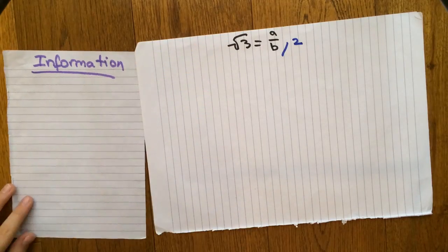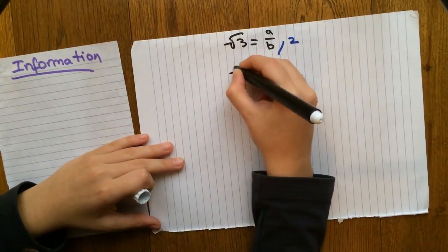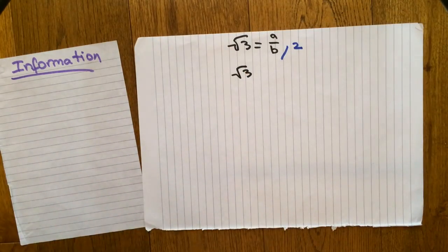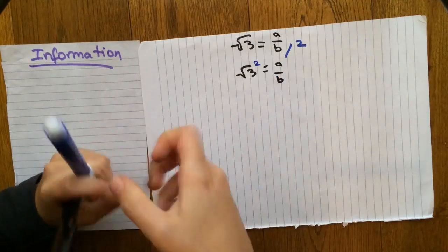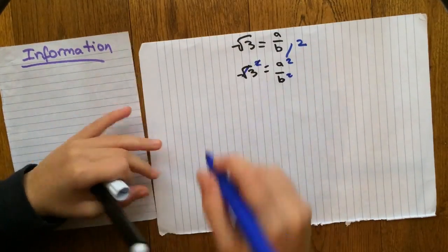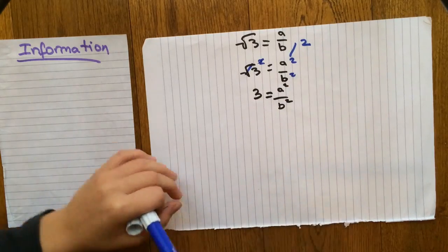Now, we want to eliminate the square root by putting everything in the second power. Therefore, square root of 3 in the second power is equal to a squared over b squared. The square root and the second power cancel out, leaving us with 3 is equal to a squared over b squared.